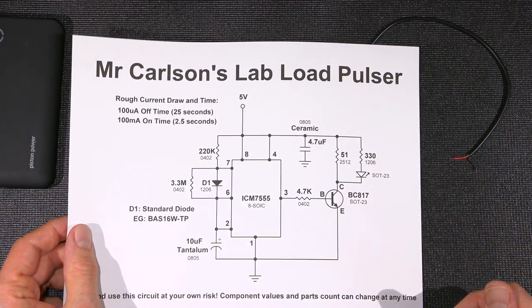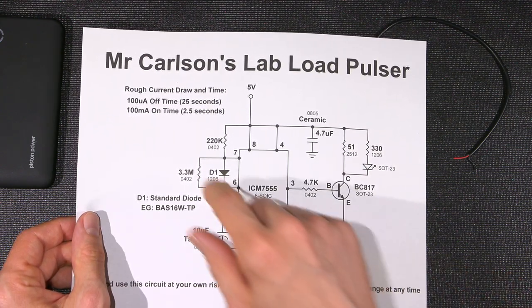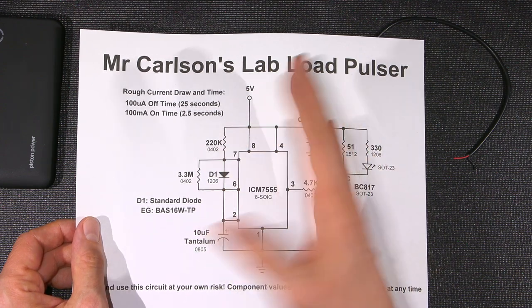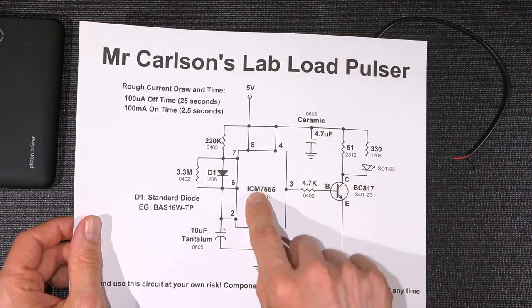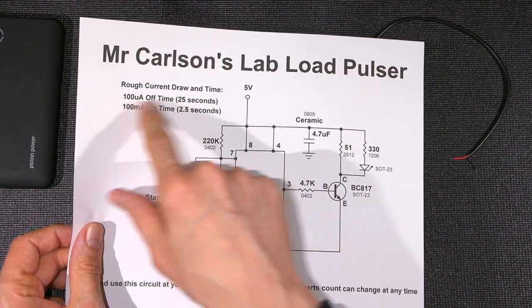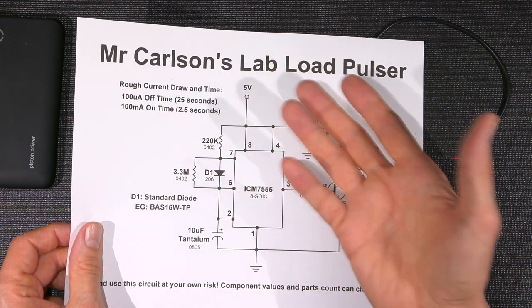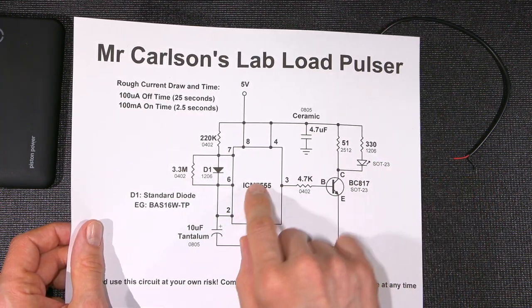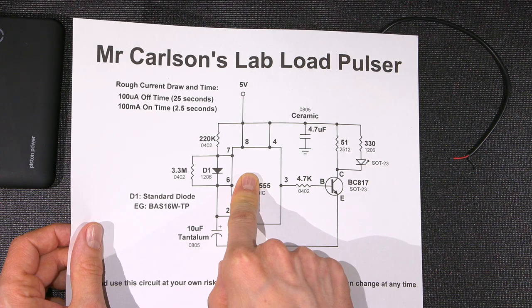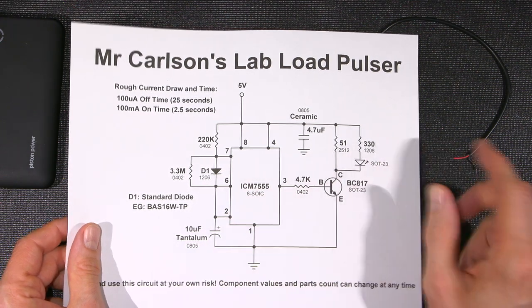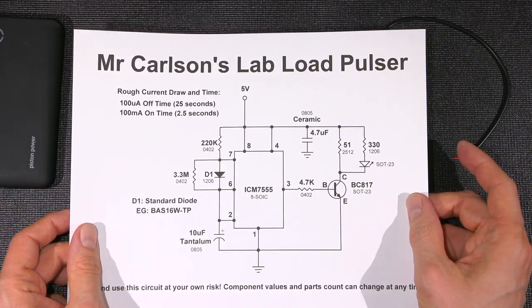This is just a standard diode. You could use a 1N4148 or something like that in here, 4152, whatever you have kicking around, just a standard diode. This IC, you can't use a standard 555 for this unless you want a much higher off-current. This thing will pull 100 microamps when this is not turning anything on. So a standard 555 timer would be drawing a lot more current. You want to use the ICM 7555, the CMOS device, it pulls very little current.